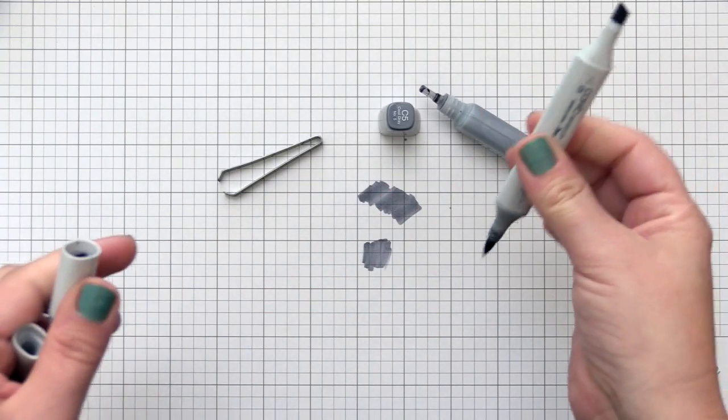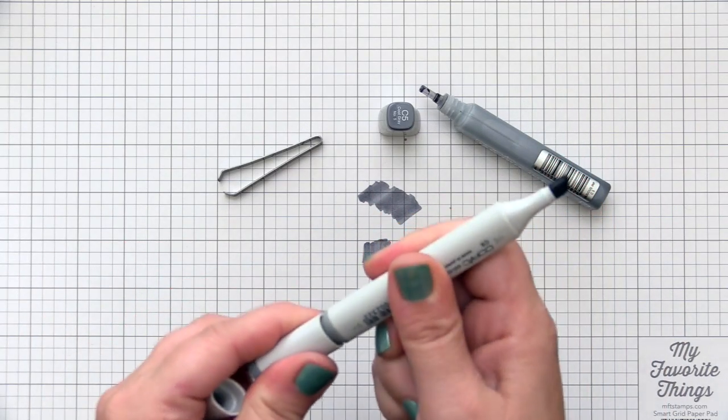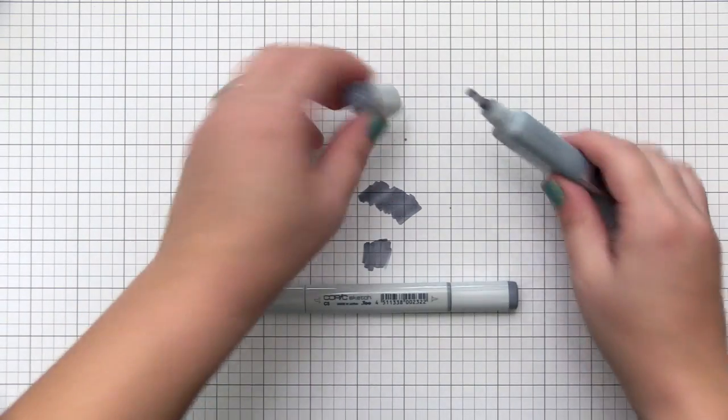It's definitely much easier to do it the first way I showed, but if you need to add some ink to the marker very quickly and don't want to go through the whole process, then this is a quick way to add some ink to the marker.